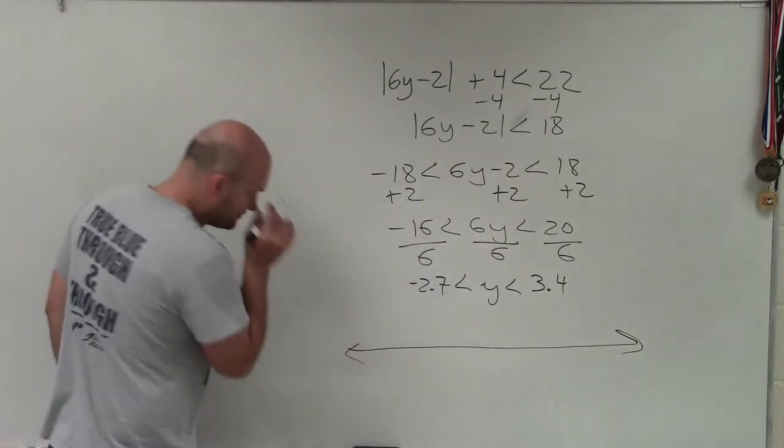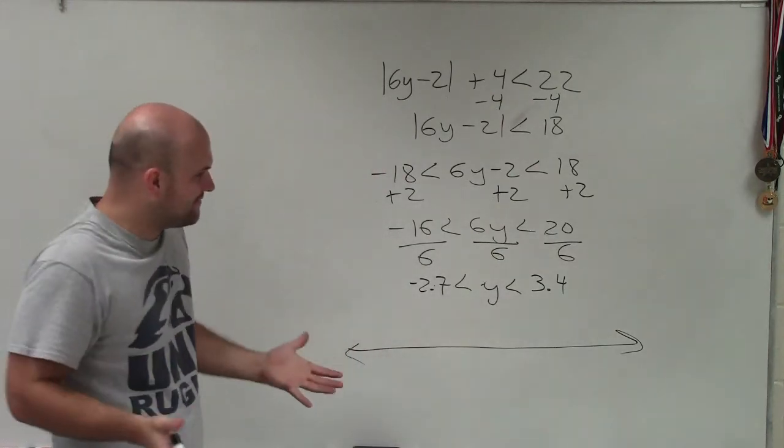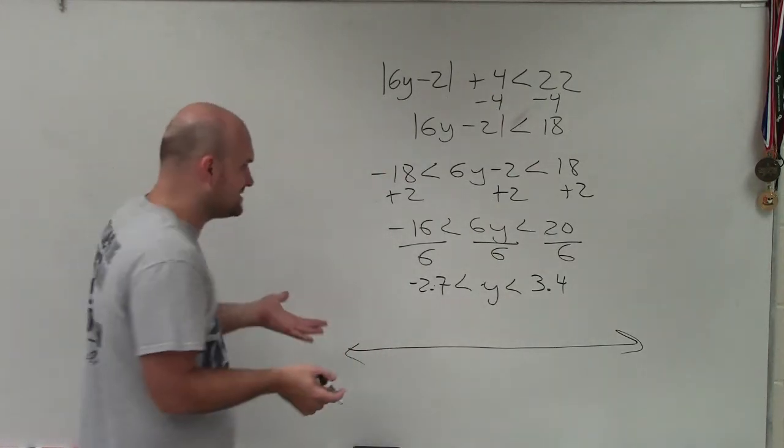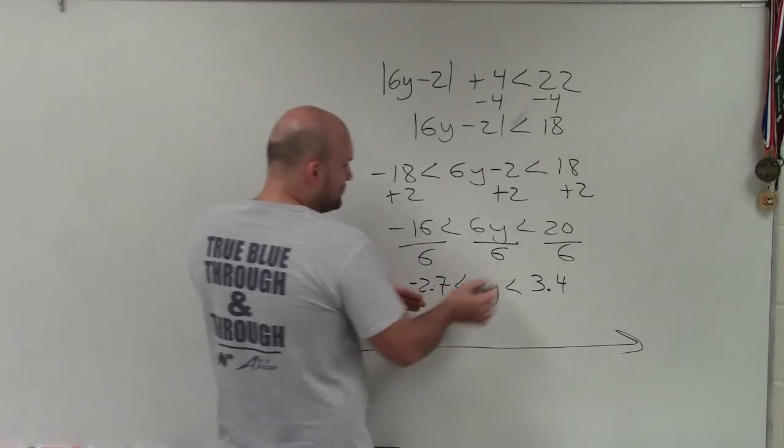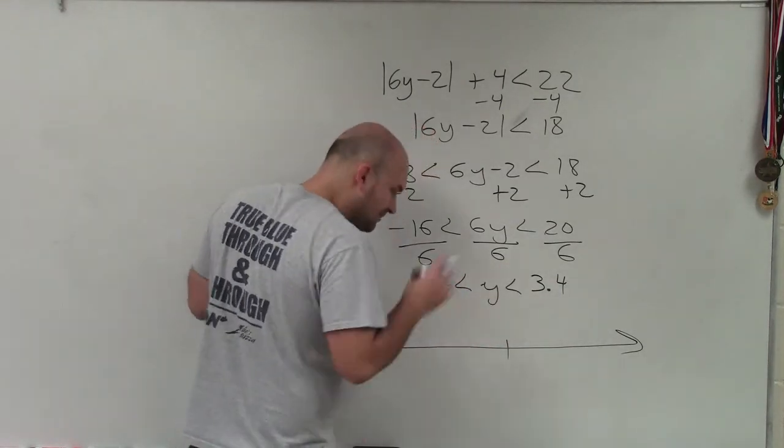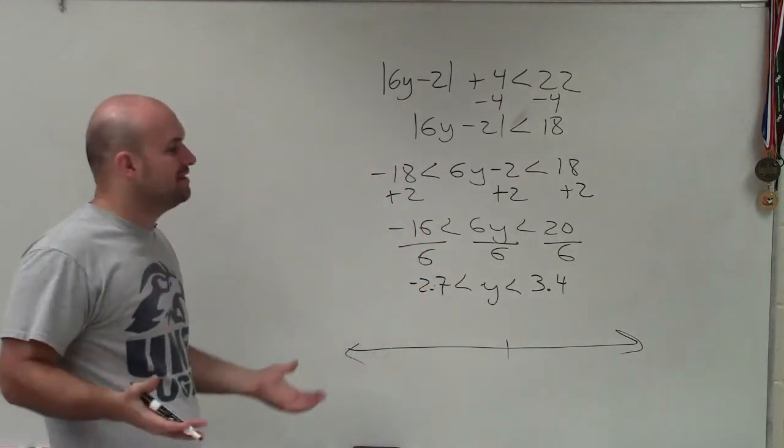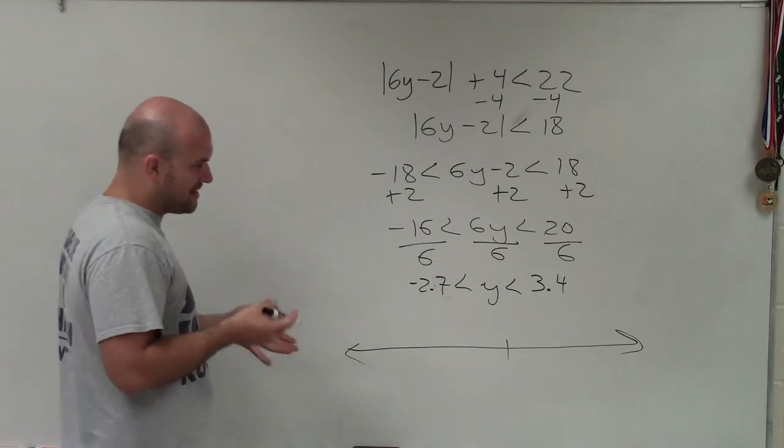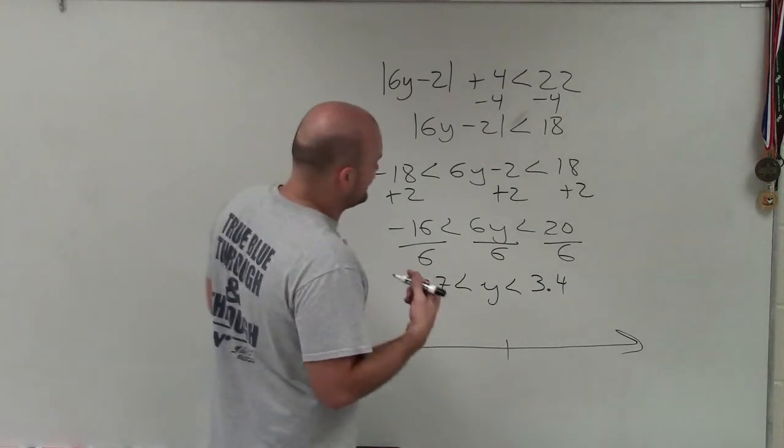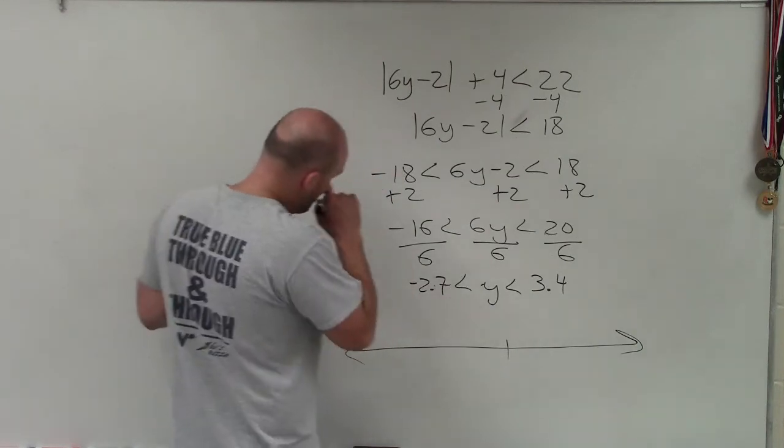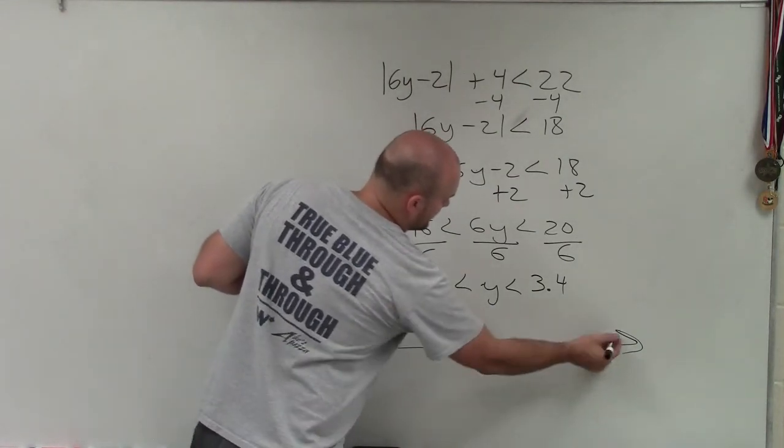So when graphing this, the value of my y is going to be between negative 2.7 and 3.4. I'm not going to get very detailed with this, I'm just going to approximate. Dealing with decimals or fractions, it's not very fun doing an exact line graph. So I'm going to use some approximations. Here's 0, 1, 2, 3, 4.